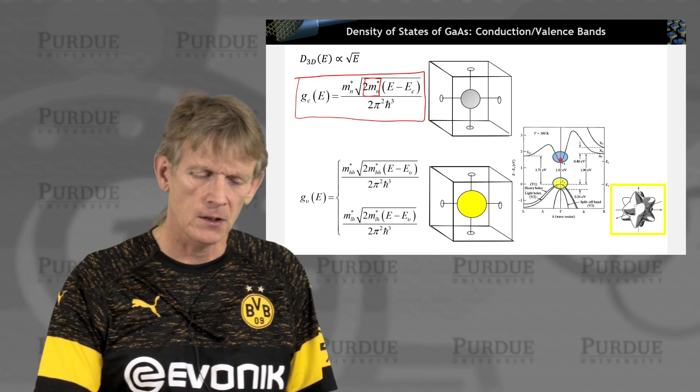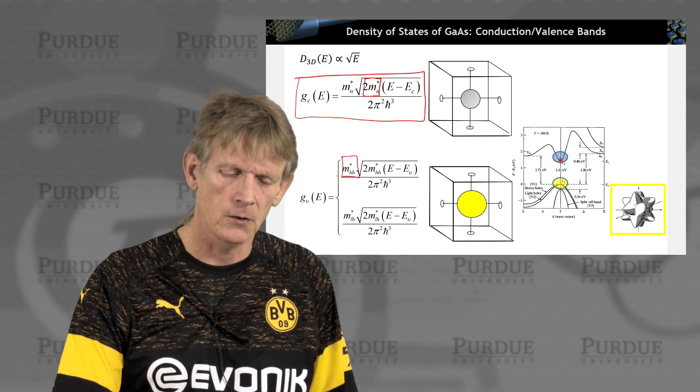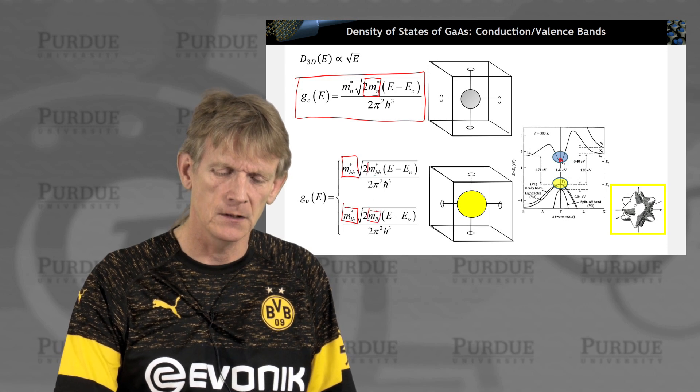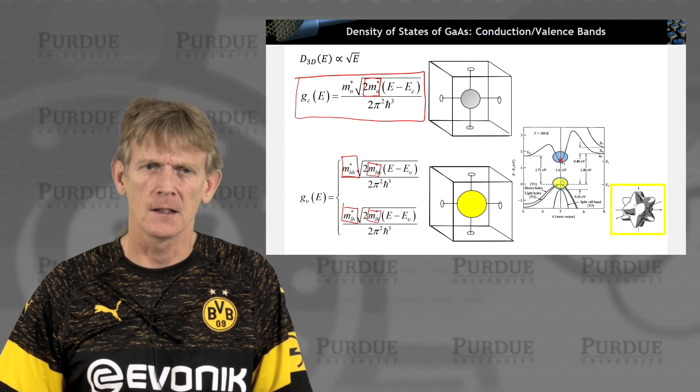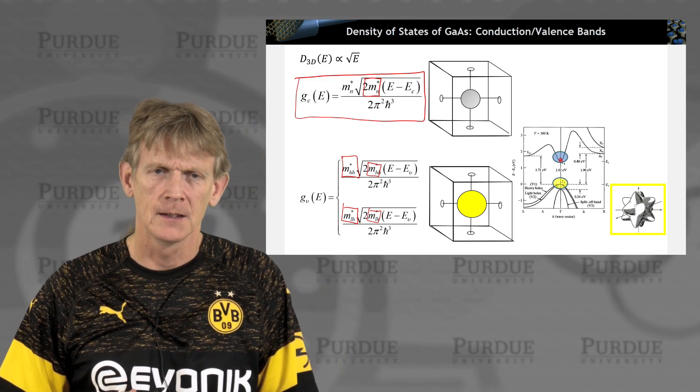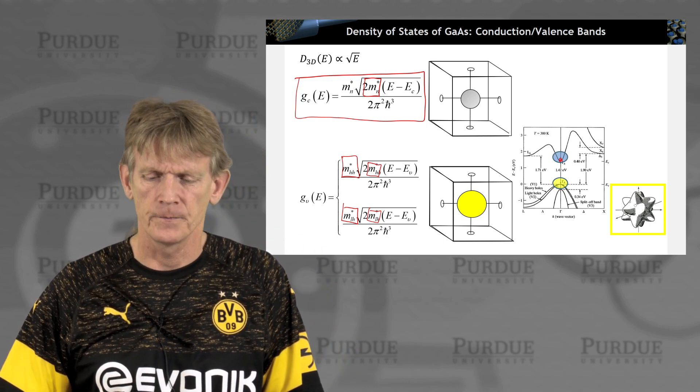Nevertheless, people talk about a single heavy hole effective mass and a single light hole effective mass that folds into the density of states. And people then integrate those states over these effective values.